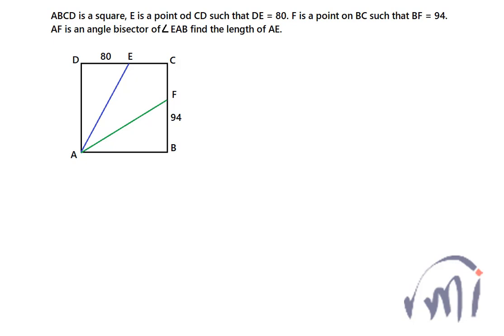This is a very interesting problem and it has a very different way of solving it. Here we have a square ABCD where E is a point on CD such that DE is 80 and we have F a point on side BC of the square where BF is equal to 94. AF is angle bisector of angle EAB that means if this is equal to theta this angle is also equal to theta and we have to find the length of AE.